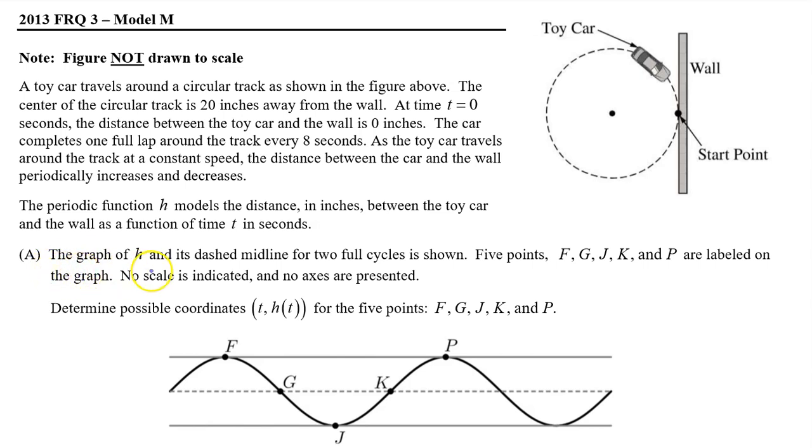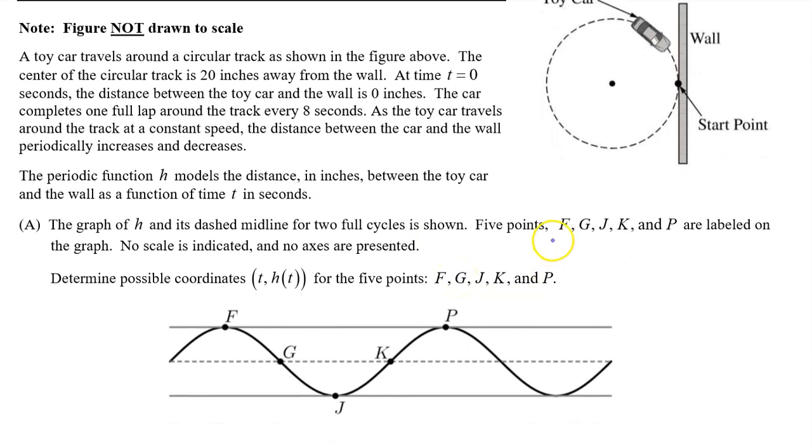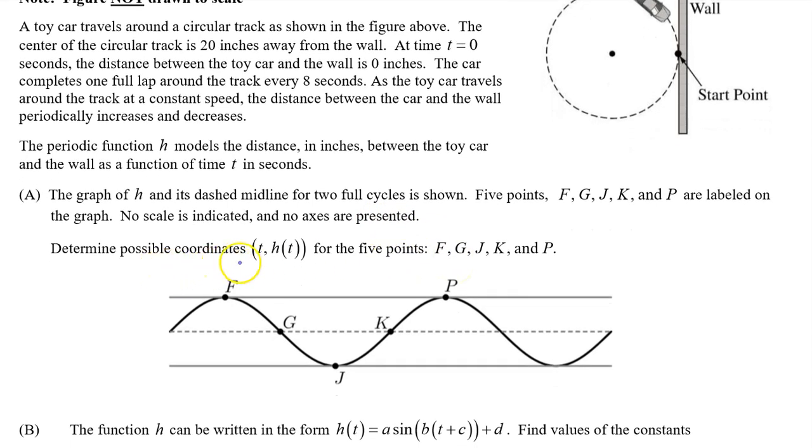Part A. The graph of H and its dashed midline for two full cycles is shown. Five points F, G, J, K, and P are labeled on the graph. No scale is indicated and no axes are presented. Determine possible coordinates for the five points F, G, J, K, and P.